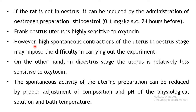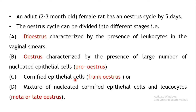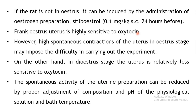Once the rat is in the frank estrus stage, that uterus is generally highly sensitive towards oxytocin, which is characterized by the presence of cornified epithelial cells. This stage is highly sensitive to oxytocin, so you need to identify when the rat is in the frank estrus stage before performing the bio-assay. Another problem with this experiment is the spontaneous contractions of the uterus — contractions not induced by addition of any spasmogen.